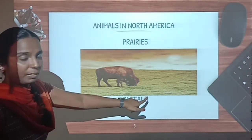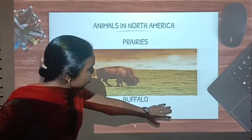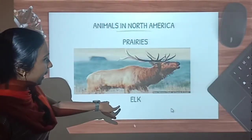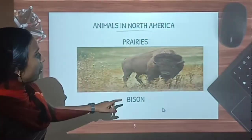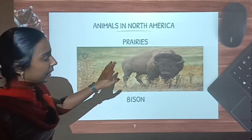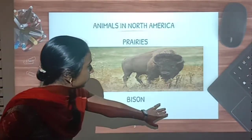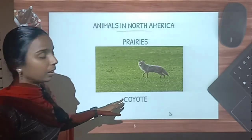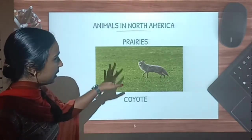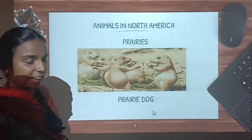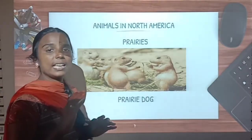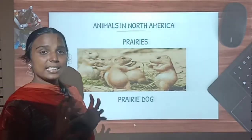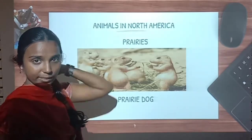Can you see this? This is the buffalo we can see in the prairies. Then see this — this is elk, seen in the prairies. Now see this — this is bison, bison in the prairies. And then see this is coyote, which is found in the prairies. And this is the prairie dog, looking like a squirrel. These are some of the important animals we can see in the grasslands of North America, that is in the prairies.